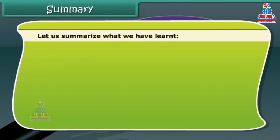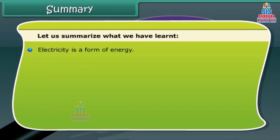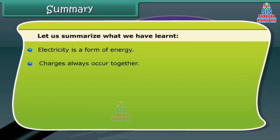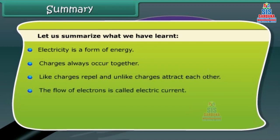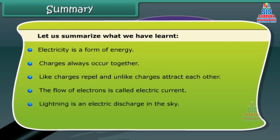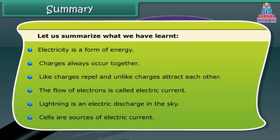Let us summarize what we have learned. Electricity is a form of energy. Charges always occur together — like charges repel and unlike charges attract each other. The flow of electrons is called electric current. Lightning is an electric discharge in the sky.